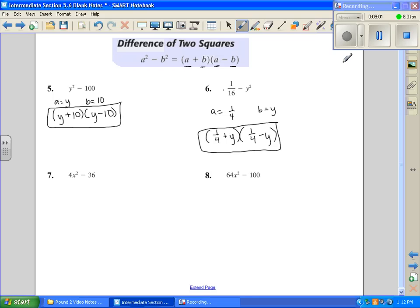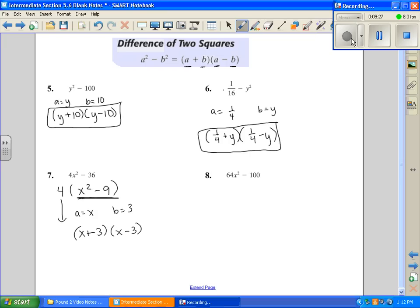And, number seven, we're going to factor out a GCF, which is a four. And, then we're left with X squared minus nine. Now, right here, that's difference of perfect squares. So, just for that part, I'm going to say my A is X, and my B is three. So, now, I'm going to plug it into my formula. A plus B, A minus B. Do not forget to drop the original GCF. And, this is going to be our answer to number seven.